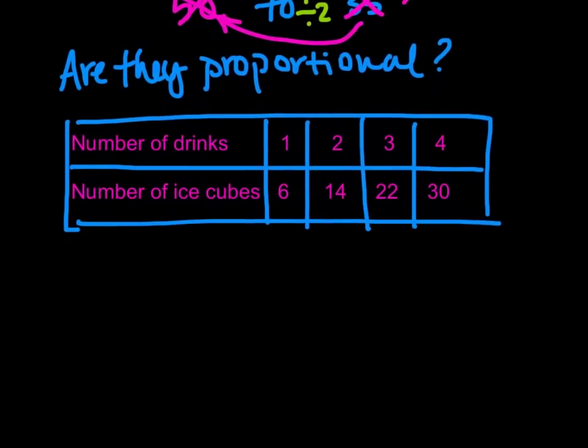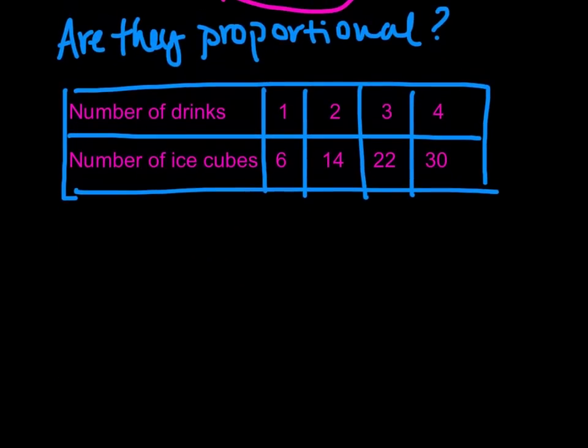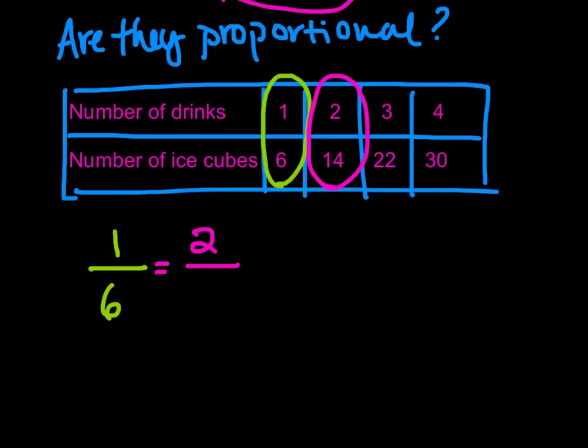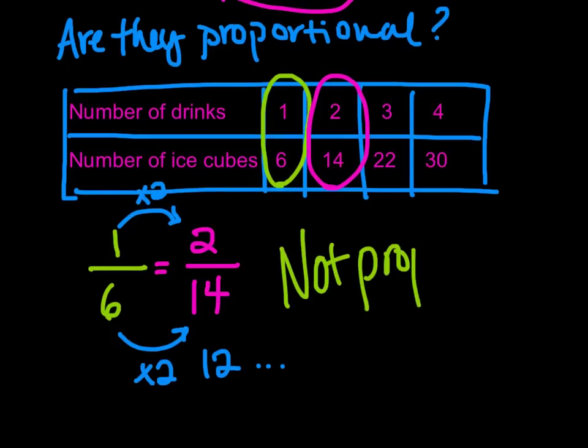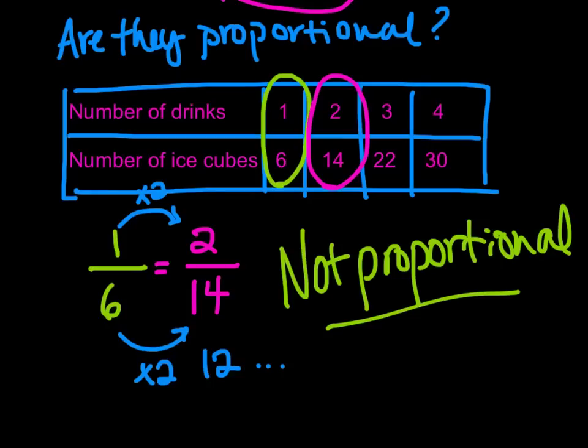Let's try one more problem. We need to determine if this is proportional. Is the number of drinks proportional to the number of ice cubes that are used? So we have 1 over 6. 1 drink equals 6 ice cubes. Let's see if that is in proportion to our situation 2 over 14. How do I get from 1 to 2? I'd have to multiply by 2. That means I'd have to multiply here by 2, 6 times 2 gets me 12. So again, not proportional and we only needed to try two of these ratios to be able to determine that.